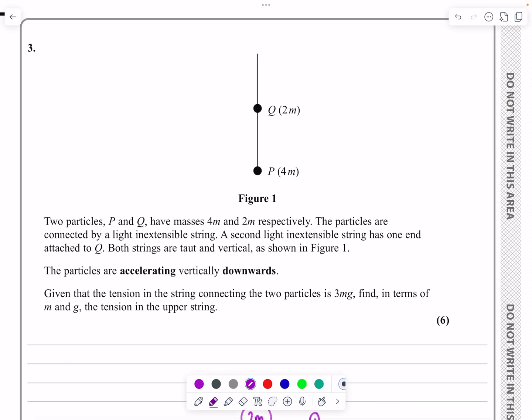It's a connected particles question, but as you can see from the diagram, Q and P are connected by an inextensible string, and then Q is also hanging down from an inextensible string. So just read through the information about the masses.